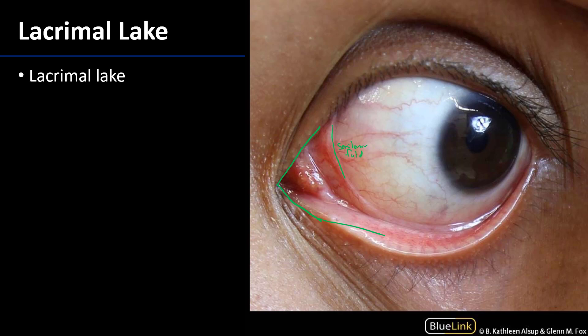The semilunar fold is a reflection of the bulbar conjunctiva that frees the eye to move about. It's a vestige of the nictitating membrane in reptiles and some very basal mammals. But it helps to form the boundary of this lacrimal lake, and we can even see some of the tear fluid shimmering within the lake here.